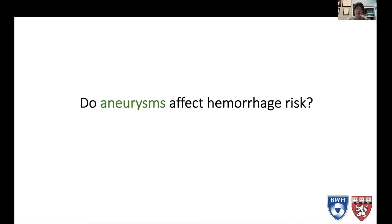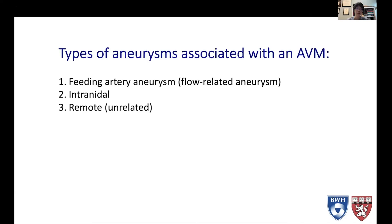The hemorrhage risk. As I alluded to earlier, the types of aneurysms associated with AVMs include feeding artery aneurysms — these are flow-related aneurysms — as well as intranidal aneurysms and remote aneurysms. Remote aneurysms are totally unrelated and may be in the other hemisphere, for example.